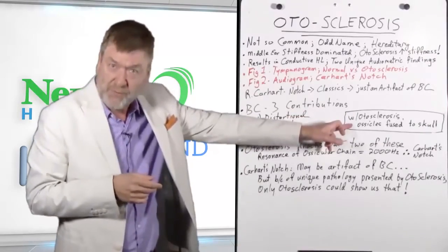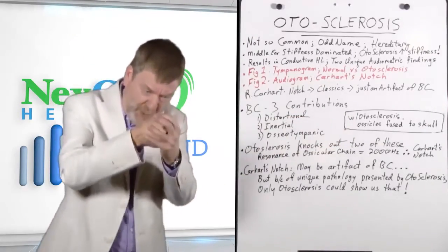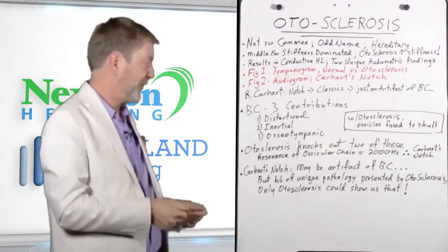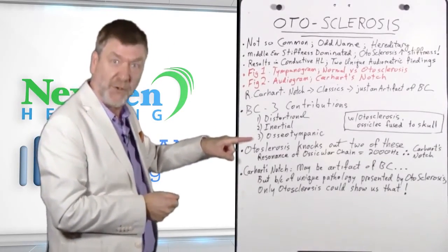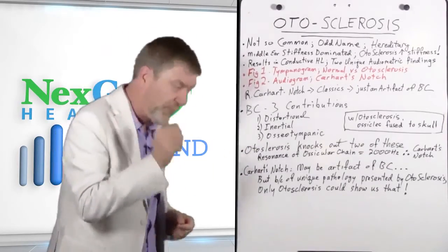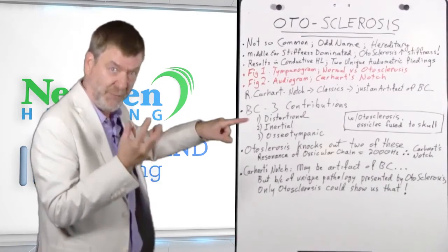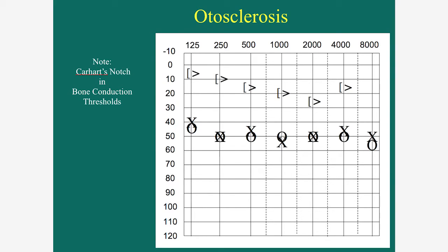Well, with otosclerosis, the pathology, that porous bone surrounding the footplate of the stapes, you now have the middle ear ossicles fused to the skull. And as a result, you've lost inertial contribution and you've lost osseotympanic. You've lost those two contributions. And you've only got distortional contribution to bone conduction sensitivity remaining. This is the lion's share, it's the big one.